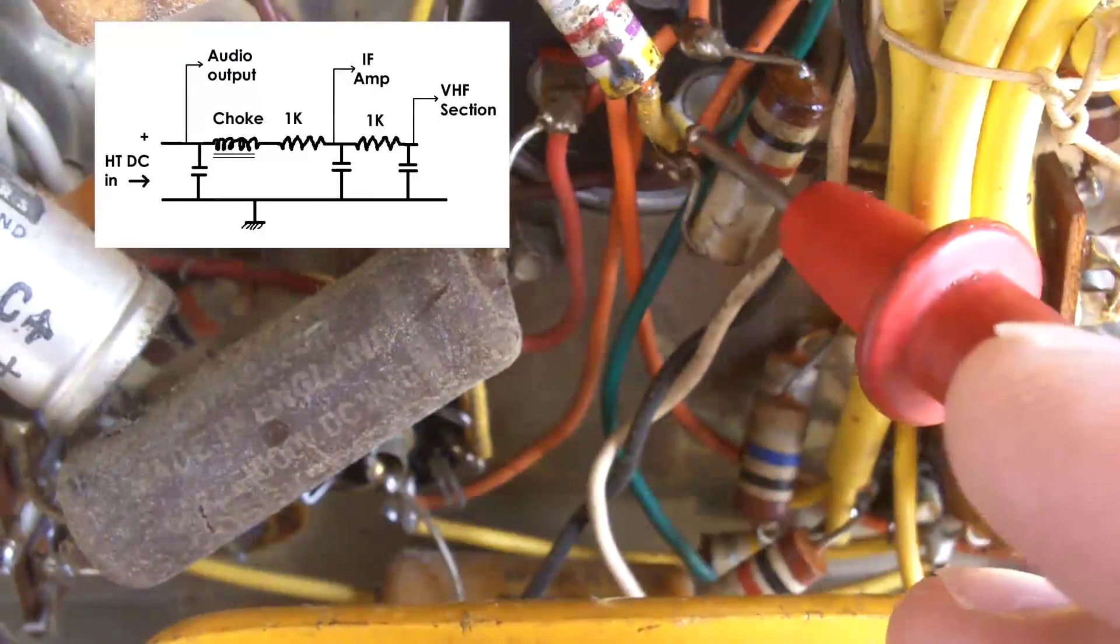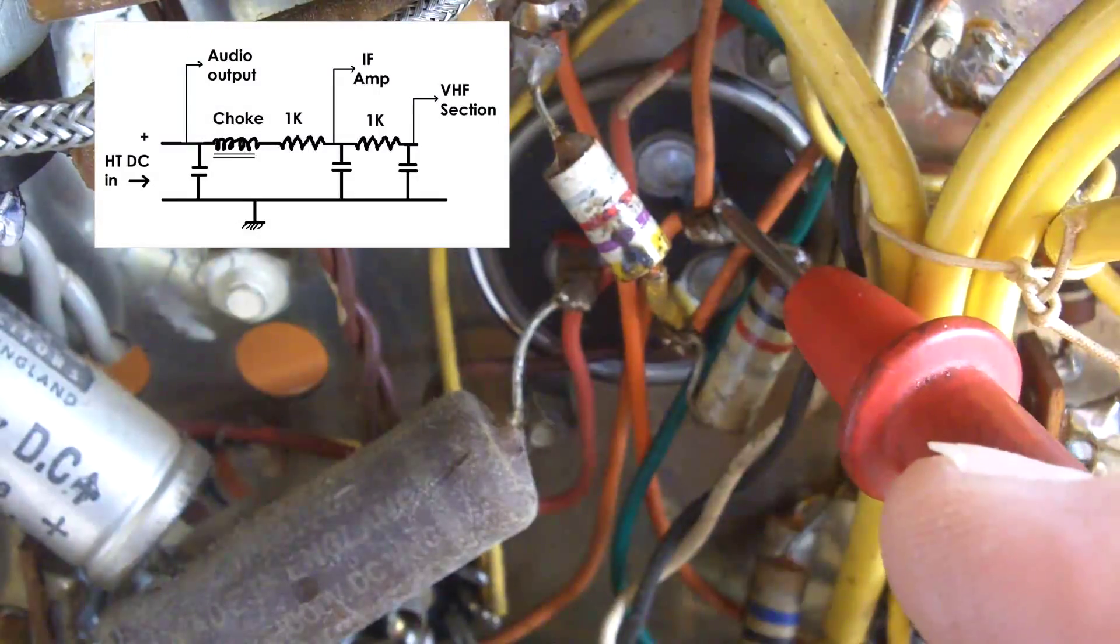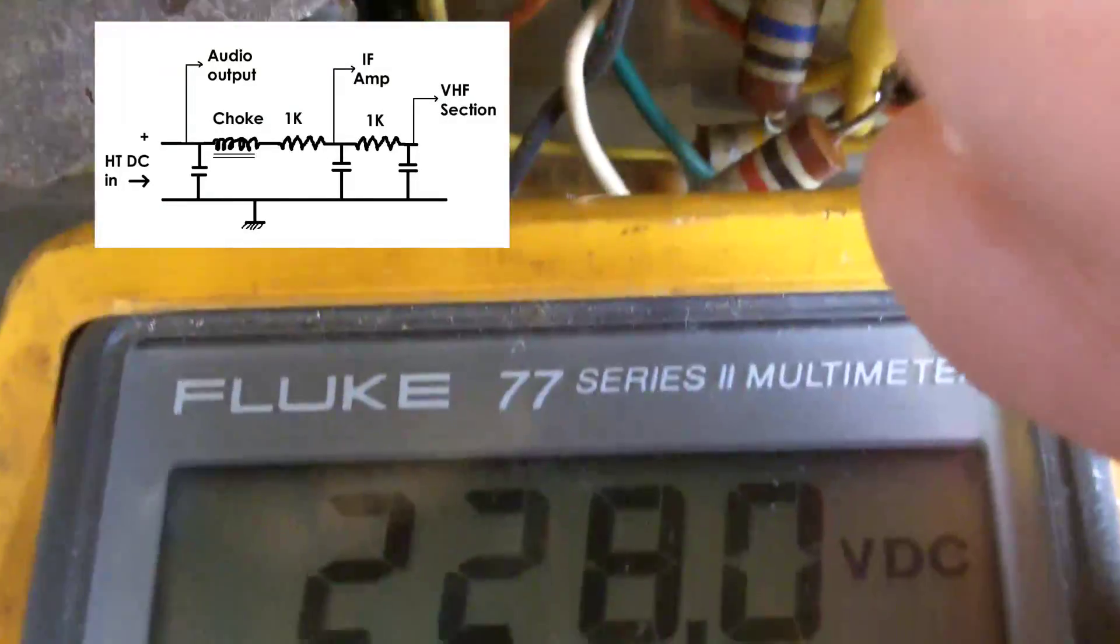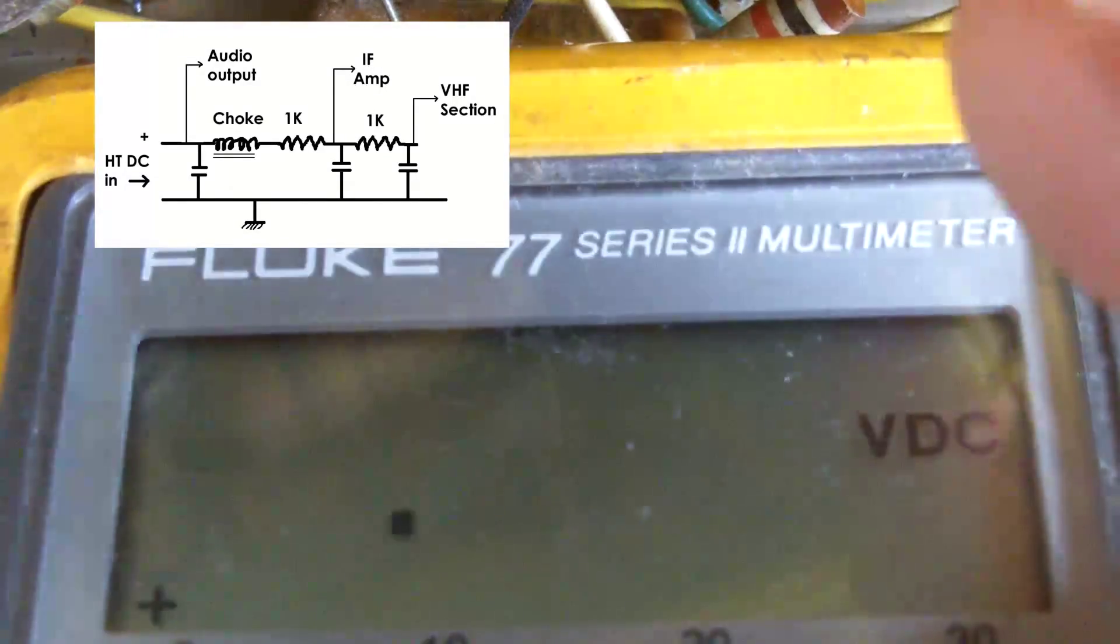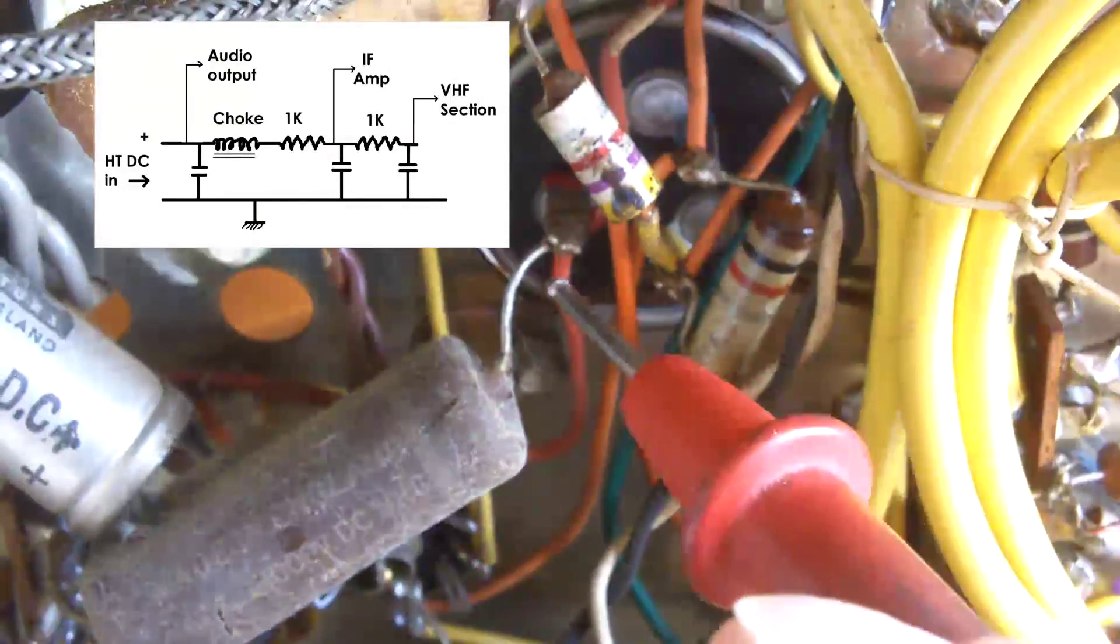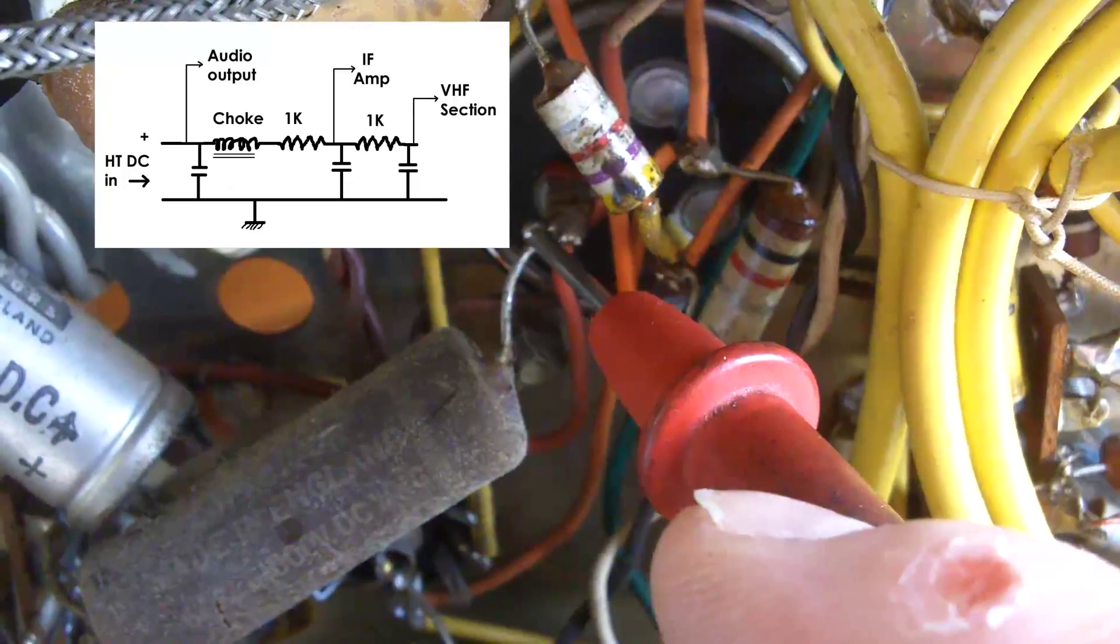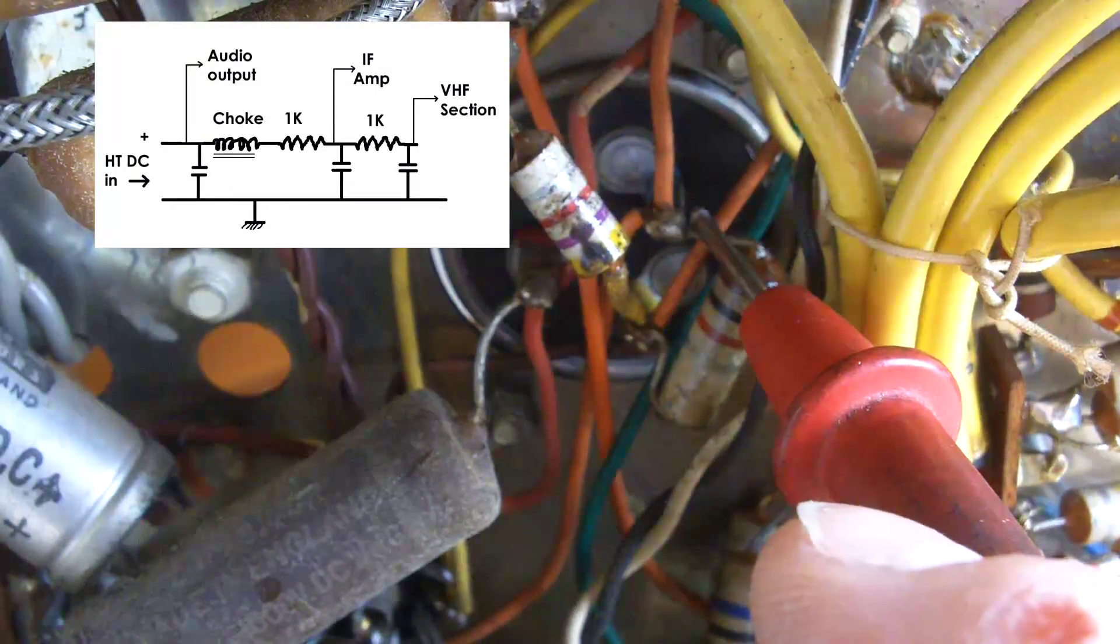And from that capacitor point it goes through this 1K resistor up onto the top pin of the capacitor there. And again I'll set the meter to DC and that's the DC voltage 228 volts. Again I'll switch the meter to AC and there we've got 0.13 volts ripple so not very much ripple on there at all. And you'll remember that the first connection went out to the anode of the output valve, the audio output valve. The next level went out to the IF stage and this final capacitor output goes to the VHF section.